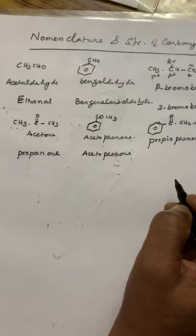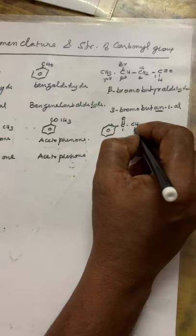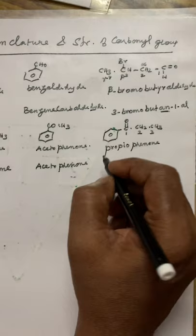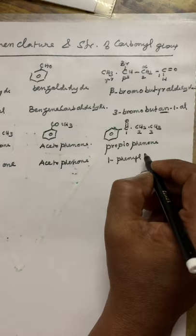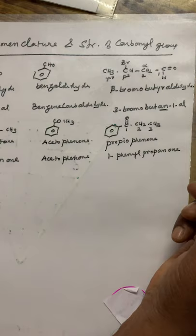What is the IUPAC name of propiophenone? Keep numbering one, two, three. The first carbon atom — the phenyl group is attached. So the IUPAC name is 1-phenylpropan-1-one. Or you can also write it as phenyl propanone.